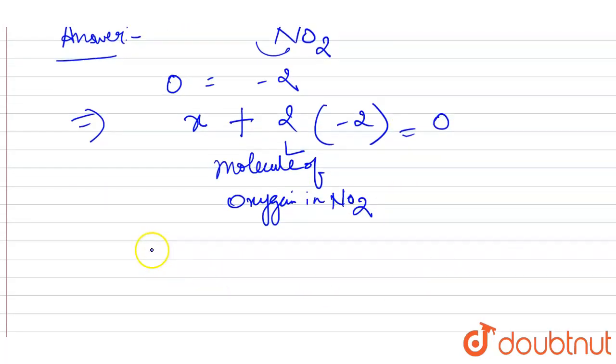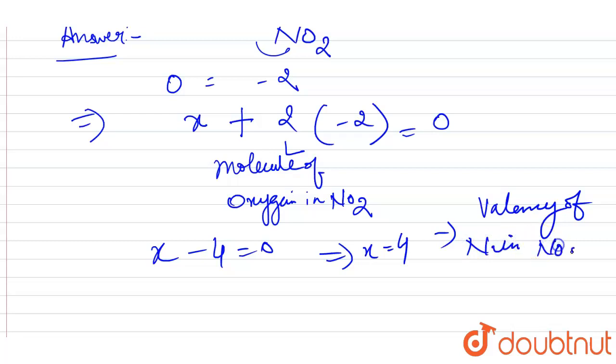Now from this equation we have x minus 4 is equal to 0. It implies x is equal to 4, which is the valency of N in NO2.